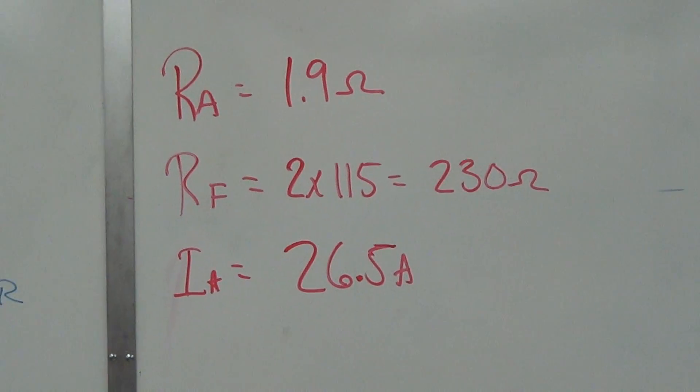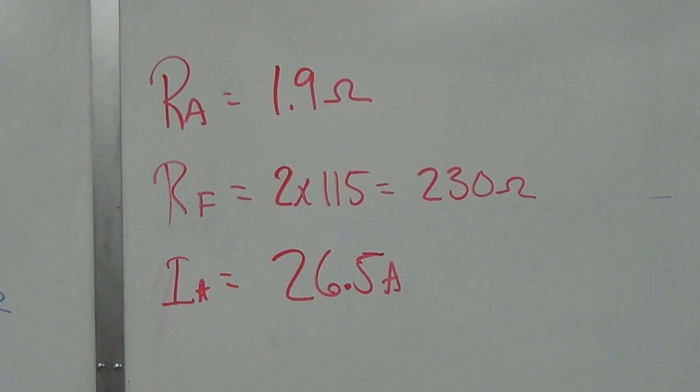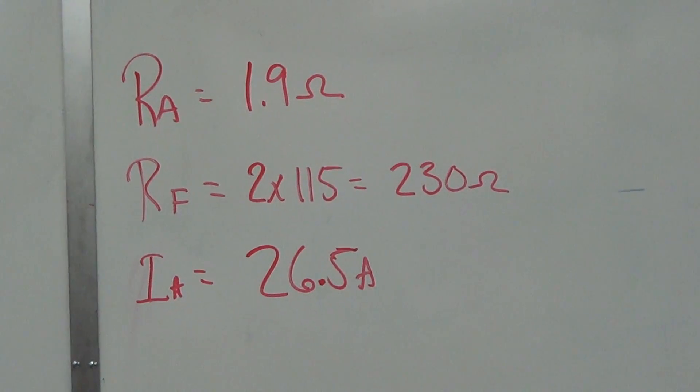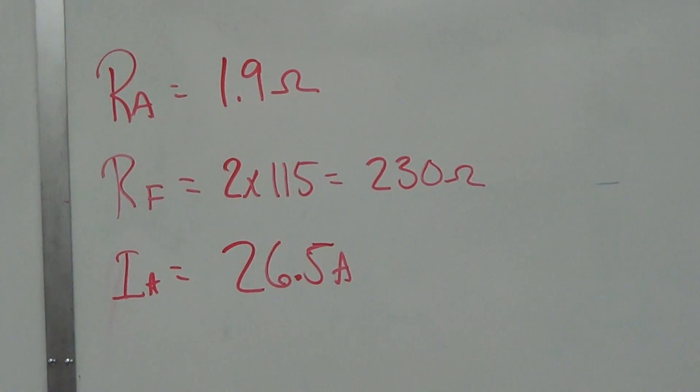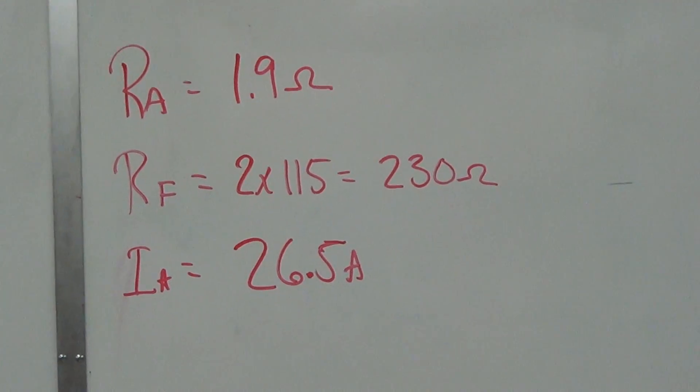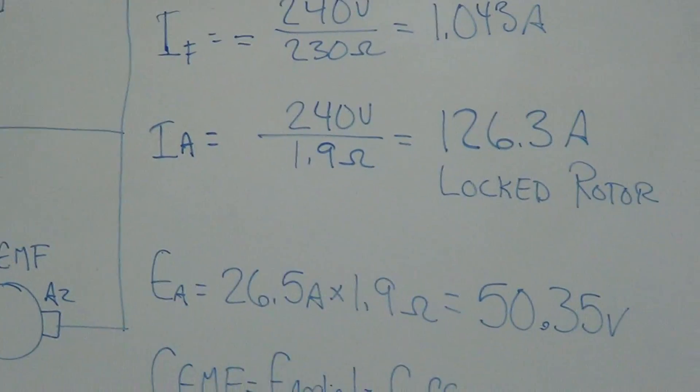Over here is the specs on the motor that I was just able to record. You've got an armature resistance of 1.9 ohm. You've got two fields that put in series, 230 ohms total, and a full load current of 26.5 amps.